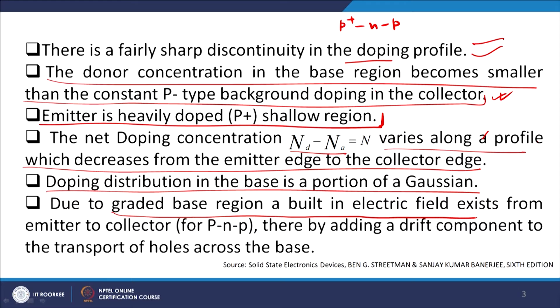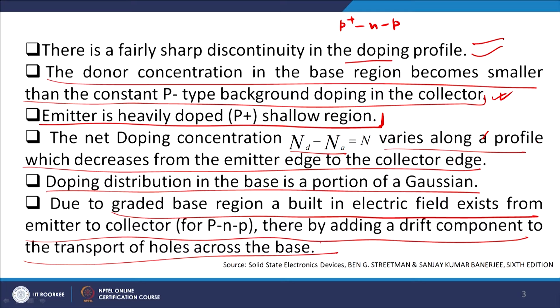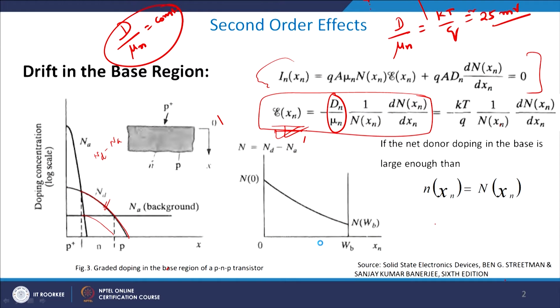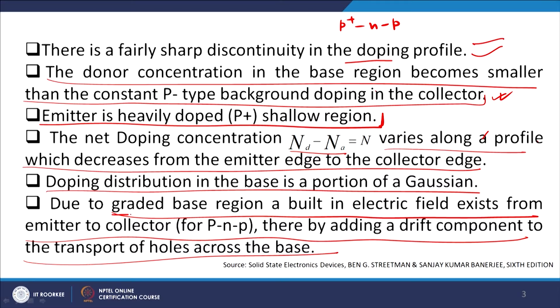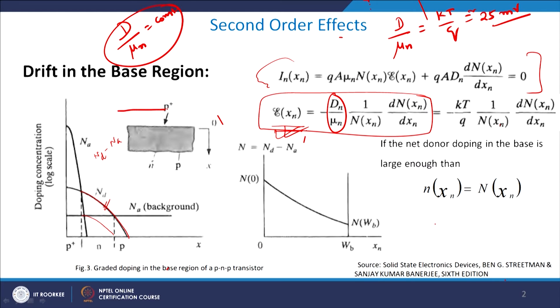Due to the graded base region, a built-in electric field exists from emitter to collector, thereby adding a drift component to the transport of holes across the base. For a PNP transistor, holes entering the base region will always be drifted by this strong electric field toward the collector side. The advantage is that a larger number of charge carriers reach the collector side because of this drift in the base region.